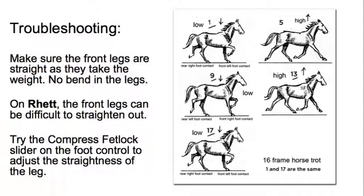For troubleshooting, I'm going to suggest that you use the same rig that you did for the walk cycle—Ret the Clydesdale. The front legs can be a little bit difficult to straighten out. Again, make sure that these legs are straight as the front right leg travels underneath the body. You want to make sure that it's completely straight, that it doesn't bend.